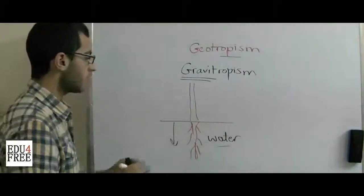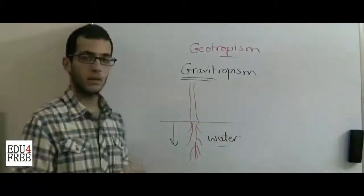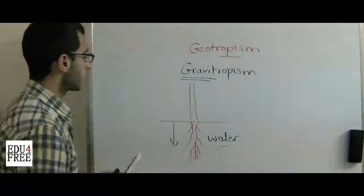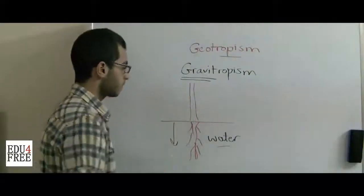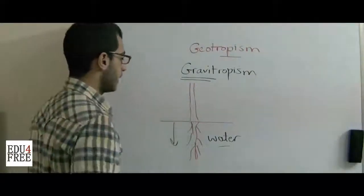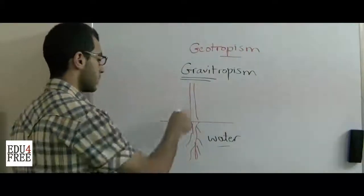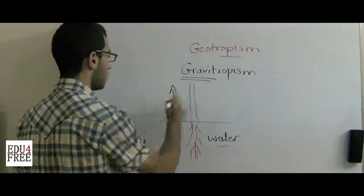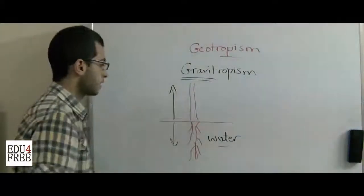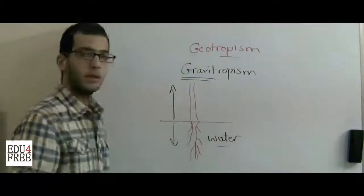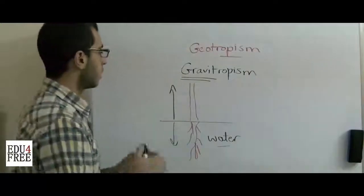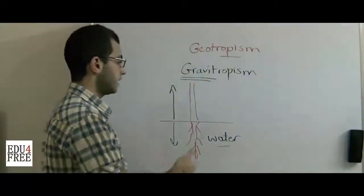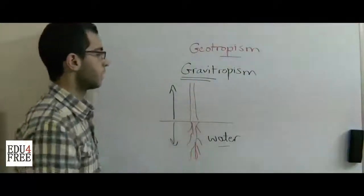As gravity affects any object on the earth, it affects the root to grow downwards. And naturally, as the root grows downwards, the stem will grow upwards. This is the nature of the plant when planted in its vertical position.